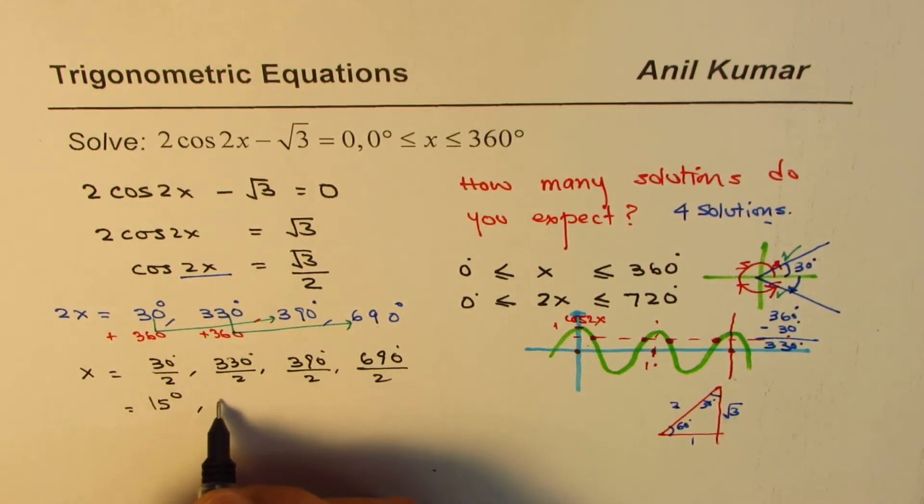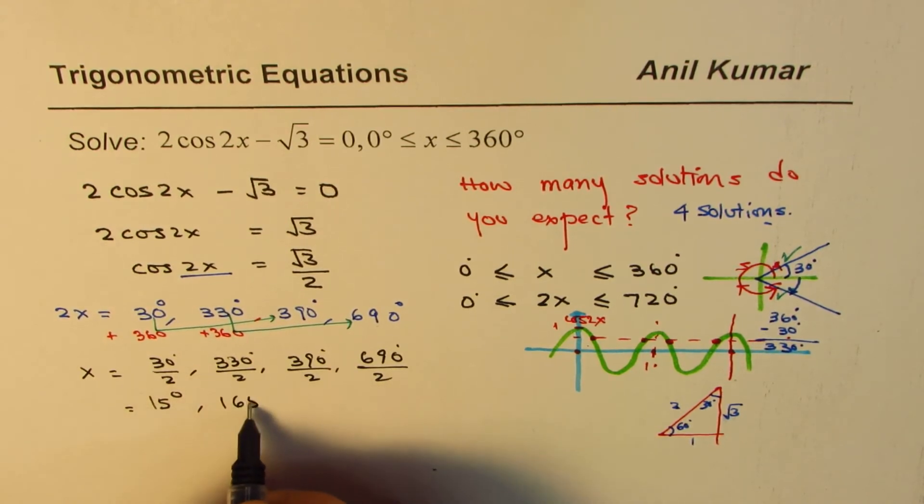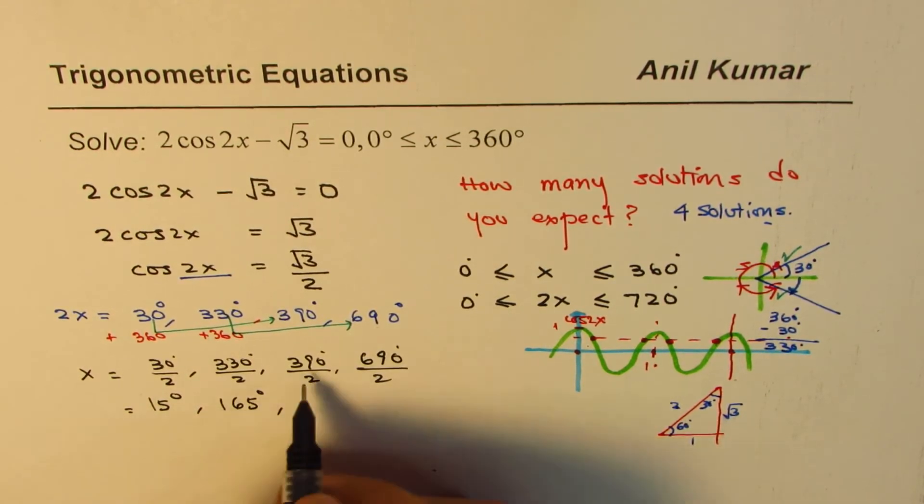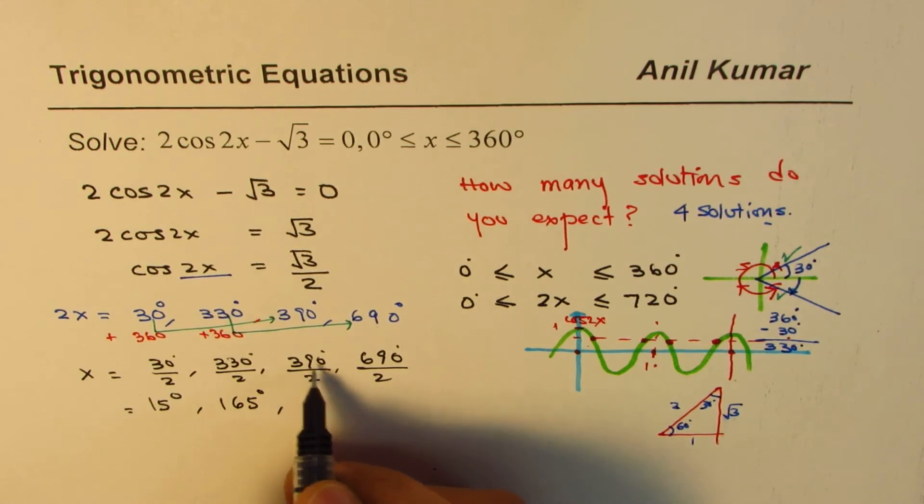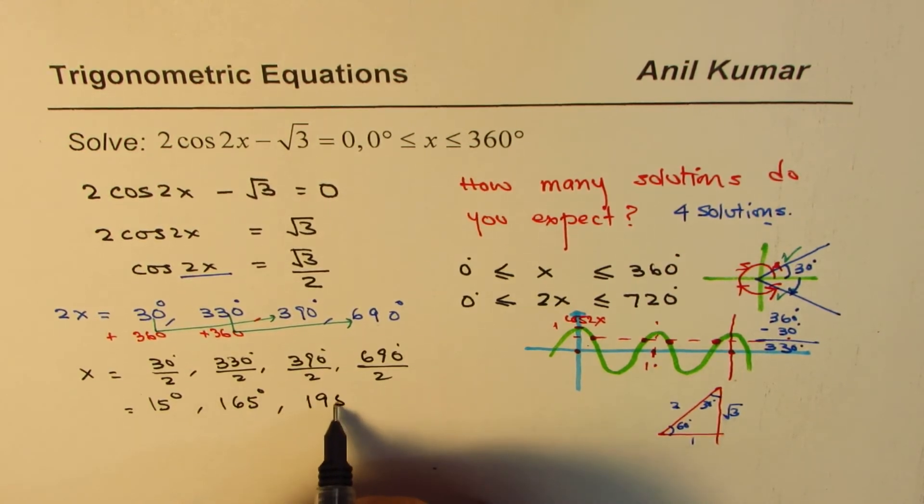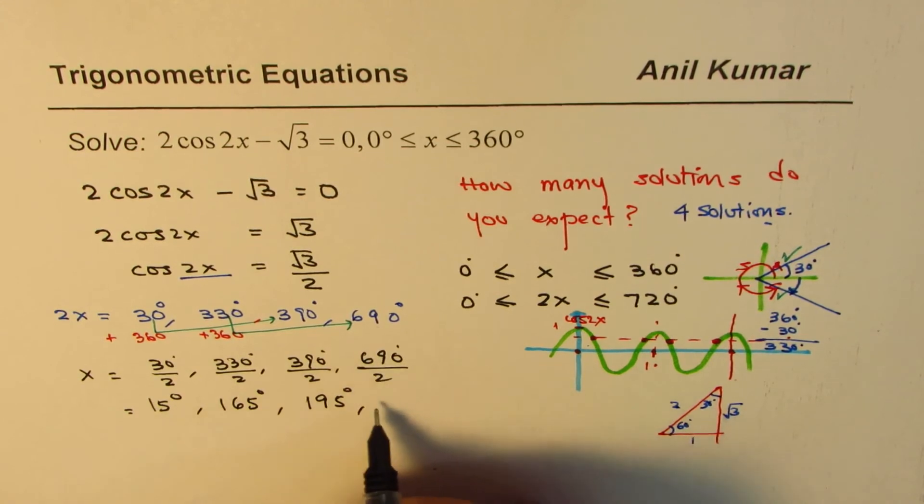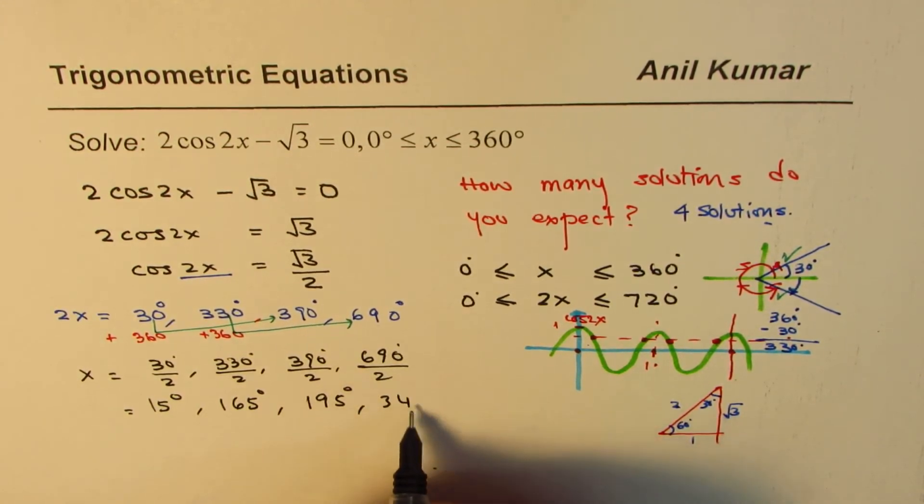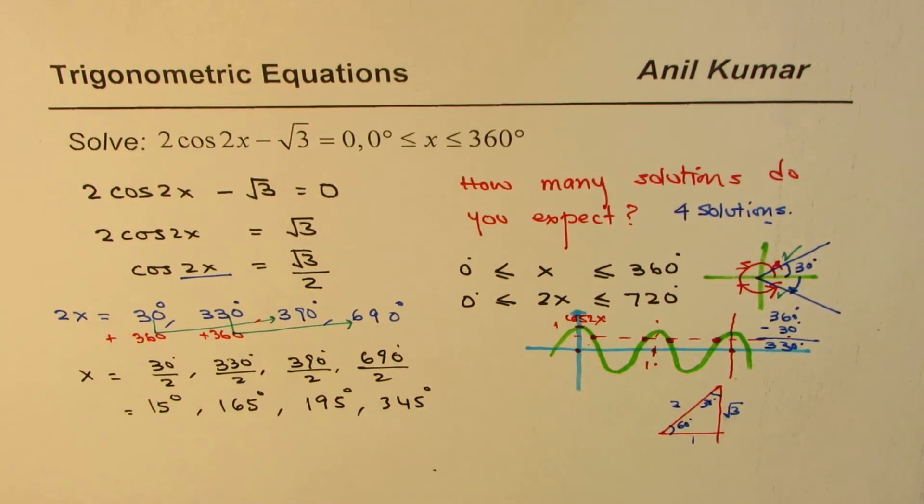Which could be written as 15 degrees, and this is 165 degrees. And then this will be 195 degrees. Use calculator. And this will be 345 degrees.